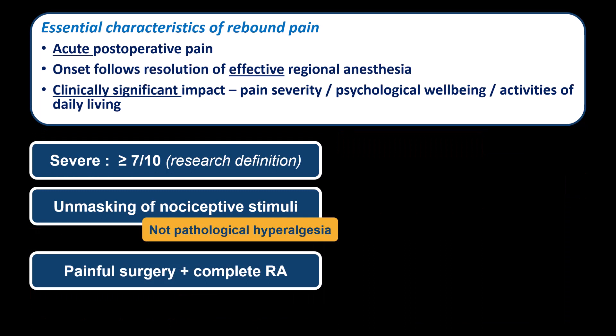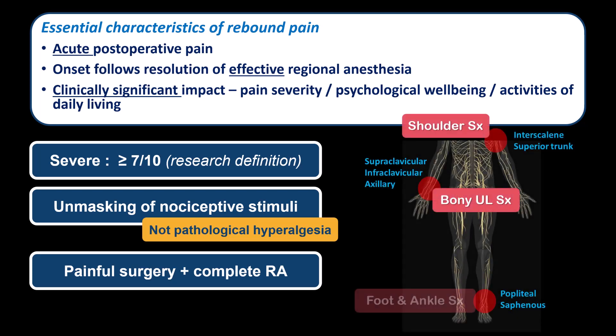The third point is that rebound pain is primarily seen with regional anesthesia techniques that provide complete or near-complete analgesia in surgeries associated with significant pain. These include brachial plexus blocks for surgical anesthesia of the upper limb, but also regional analgesia after shoulder surgery, and popliteal nerve blocks for foot and ankle surgery.